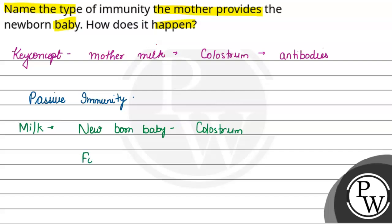So the fetus, while present in the mother's womb, also receives antibodies through the placenta — via placenta.